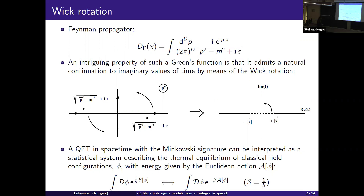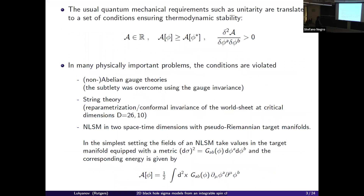In the Euclidean version, after Wick rotation, we can interpret the path integral as describing a classical statistical system in thermal equilibrium. The field is denoted schematically by phi, and the energy for the classical field configuration coincides with the Euclidean action. The temperature can be identified with Planck's constant. Standard quantum mechanics conditions translate into conditions ensuring thermodynamic stability, such as the requirement that the action be a convex function with positive definite metric.